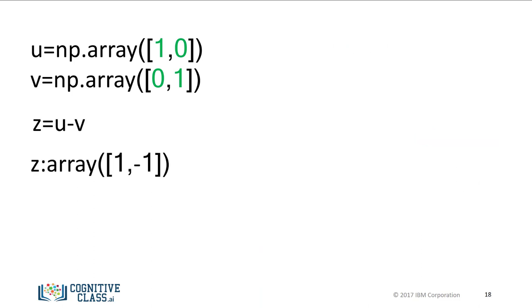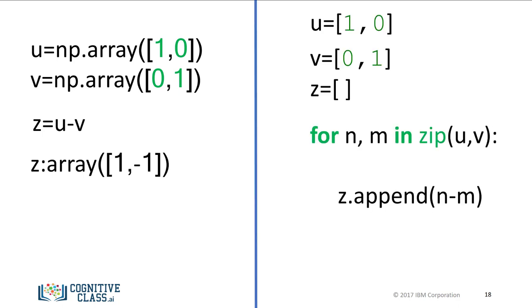We can also perform vector subtraction by changing the addition sign to a subtraction sign. It would require multiple lines to perform vector subtraction on two lists.